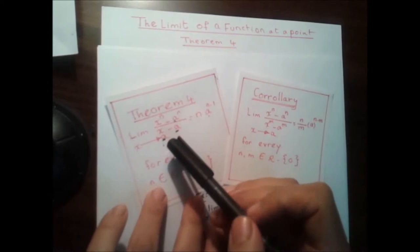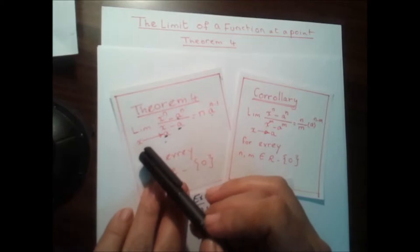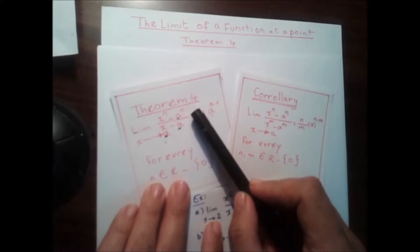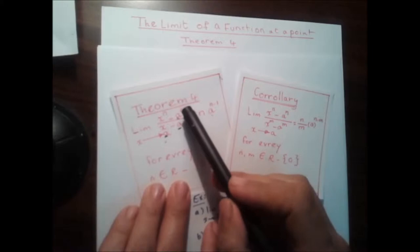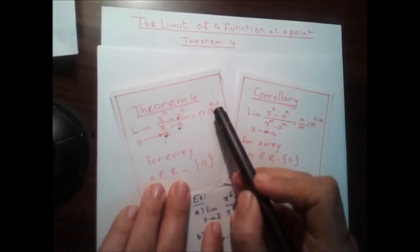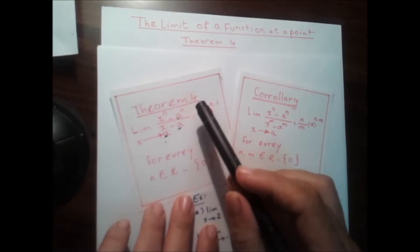Now we're going to take the corollary on Theorem 4. In Theorem 4, we studied a fractional function in this form: the limit as x tends to a of (x^n minus a^n) over (x minus a). The two terms of the numerator have the power of n, and the denominator has no powers. This is equal to n, the power of each term in the numerator, times a to the power of n minus 1, for each n belonging to ℝ minus {0}.